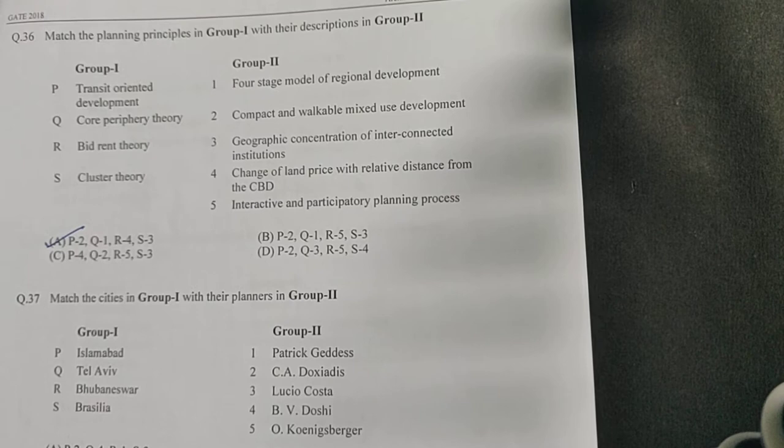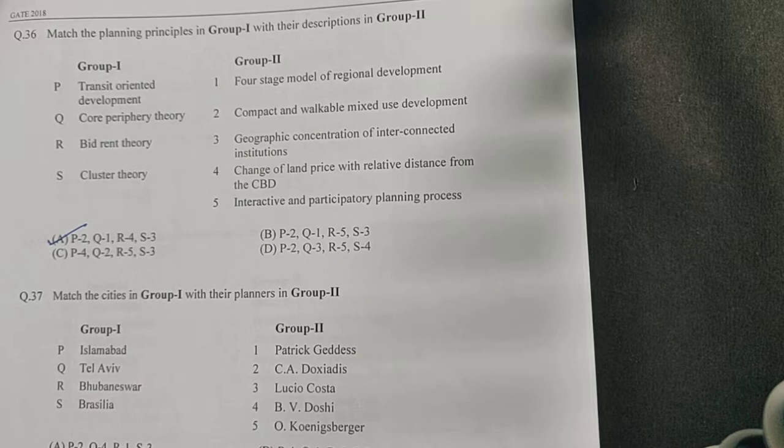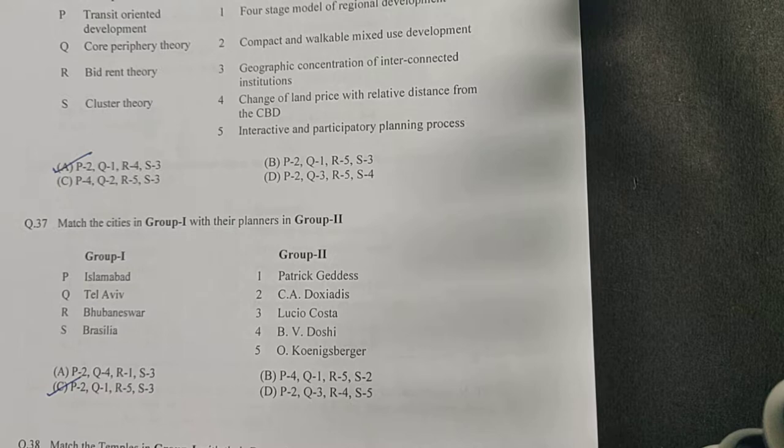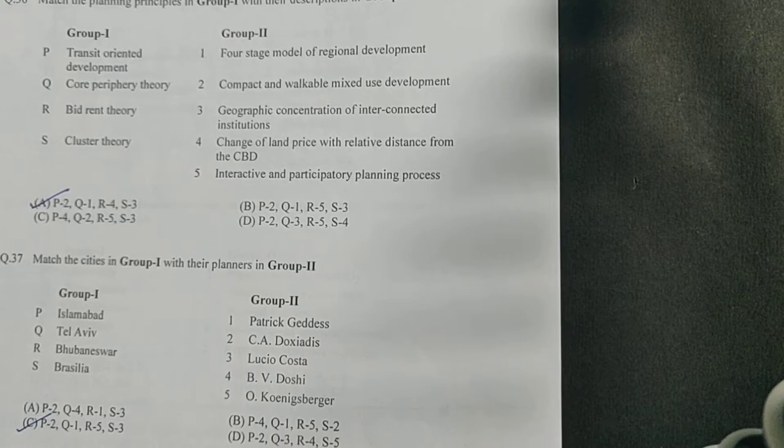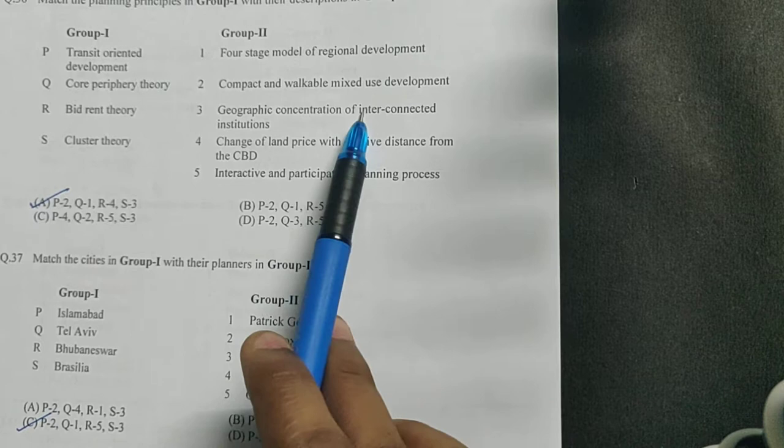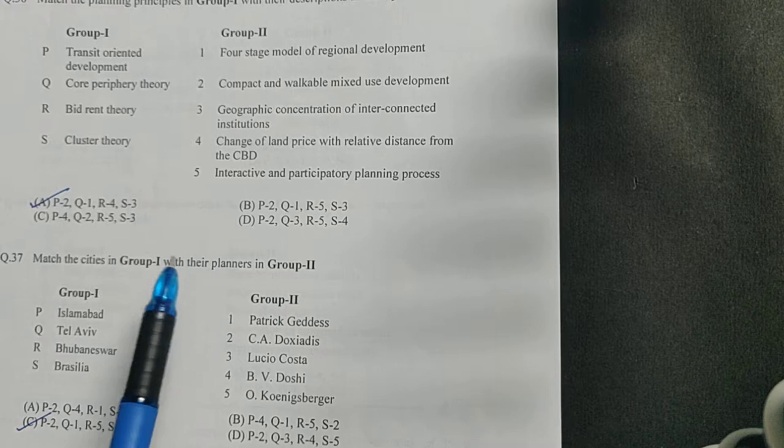Next question: different planning principles are given with their descriptions. First is transit-oriented development. What does transit-oriented development aim to have? You have all your spaces around you in a walkable distance. You try to have all your different kinds of land uses in a walkable distance, so a compact and walkable mixed-use development.